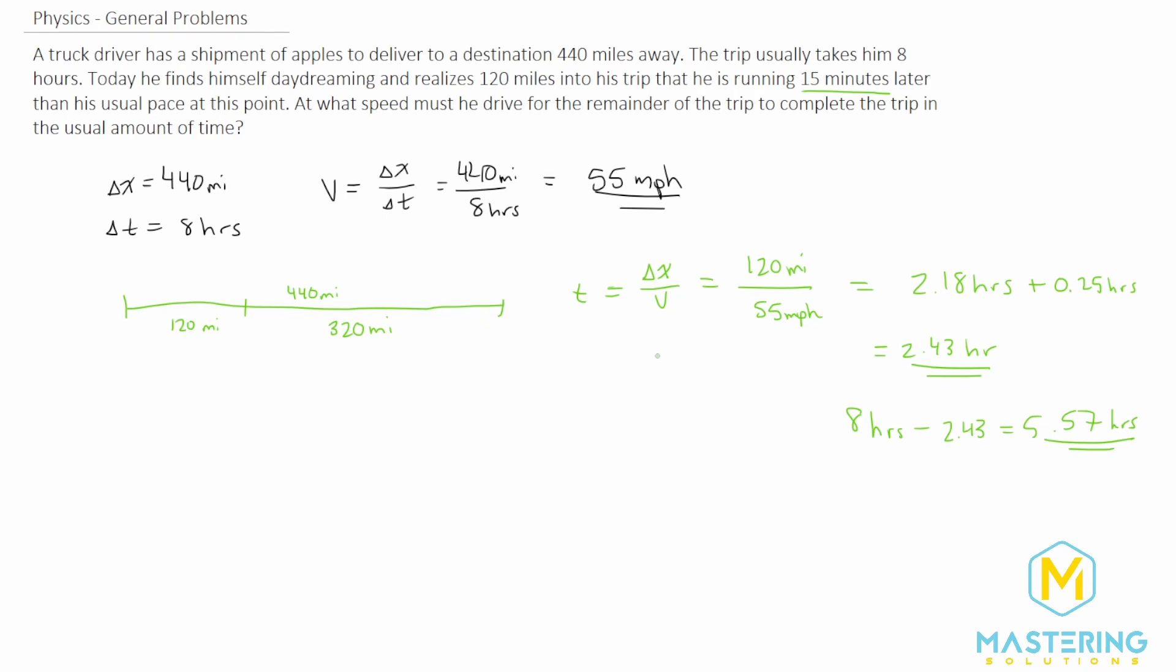We figured out that we have to do 320 more miles. So we need to figure out what speed will allow us to do 320 miles in 5.57 hours. So velocity is what we're looking for. And of course, that equation, as we talked about above, is the change in the distance over the change in time. So 320 miles divided by the time of 5.57 hours will give us the answer in miles per hour.